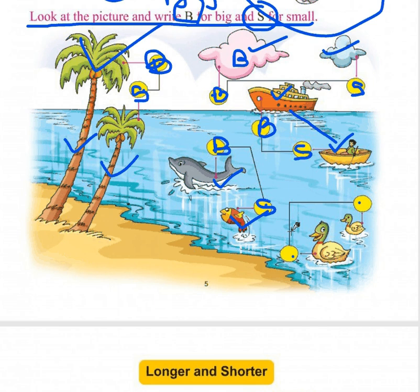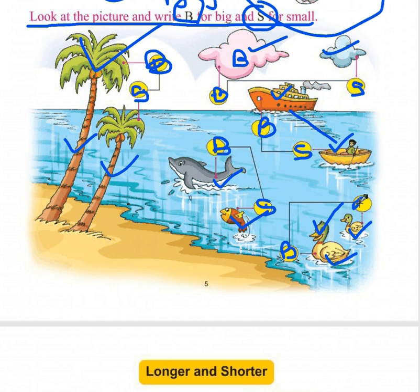Agla kya diya hai — can you see the two ducks? Which one is big? Kaun sa bada hai? This one. So here we write B for big, and this one is S for small. Okay dear students, that completes our comparison exercise.